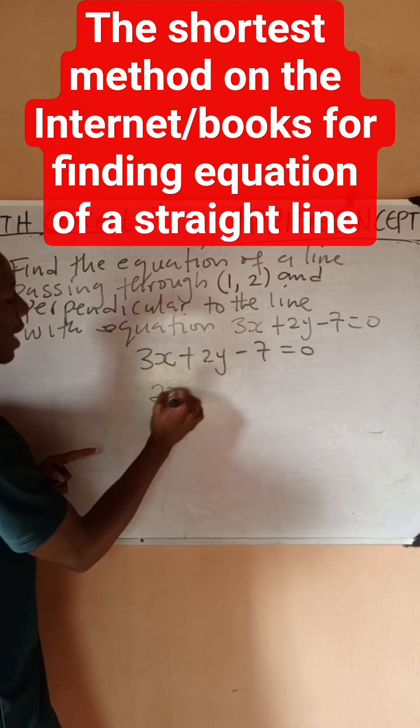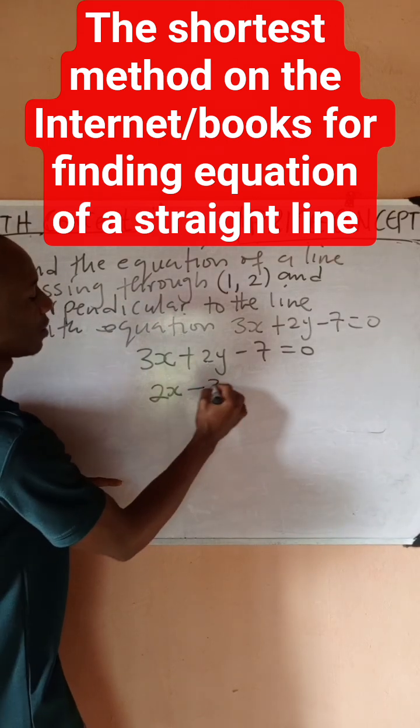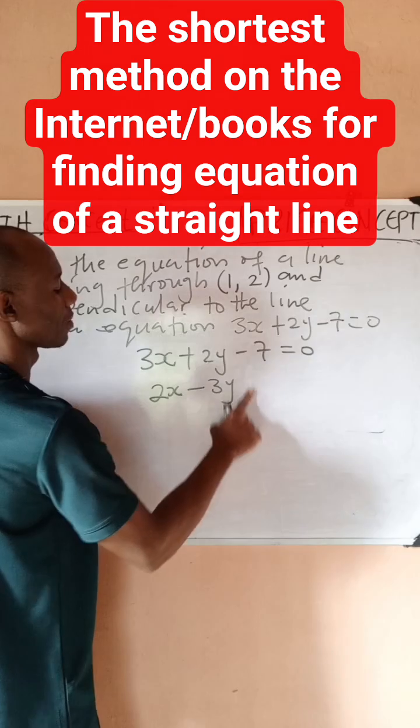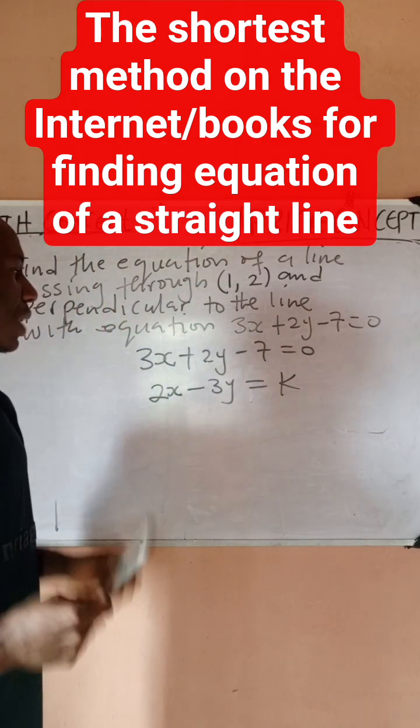Then to be equal to a constant which is what we need to know. Now what do I need to do to find k? I'll take note of this point. My x is 1 and my y is 2.